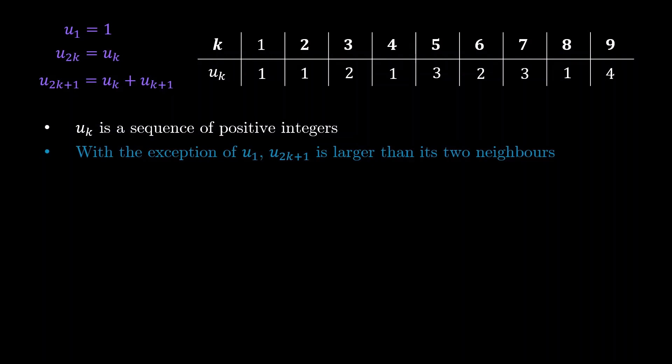How about the second statement to prove? Well, with the exception of the first term u1, I claim that all terms with odd indices are actually larger than its two corresponding neighbors. So for example, u5 is larger than u4 and larger than u6. This is also actually quite straightforward to prove.